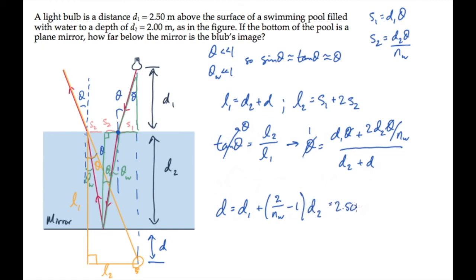Now we can substitute the values. The index of water is 1.33. Finding that the image forms a distance 3.51 meters below the mirror.